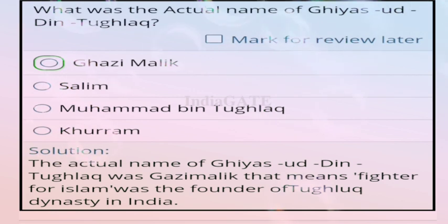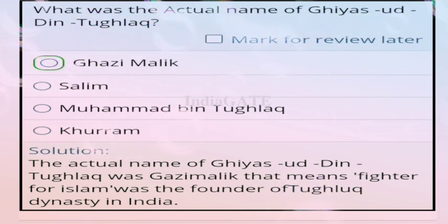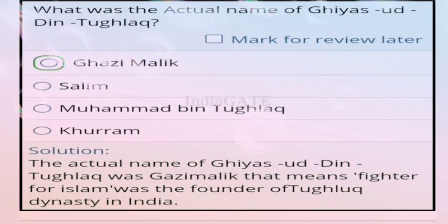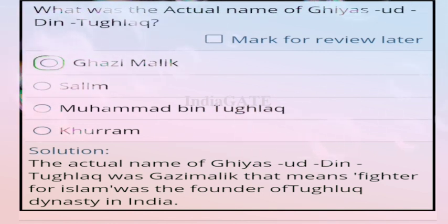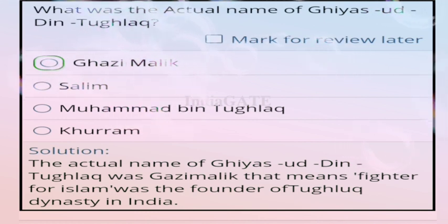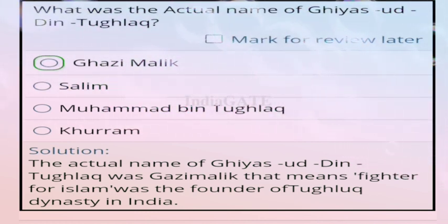Question 89: what was the actual name of Ghiyasuddin Tughlaq? Correct answer is Ghazi Malik. Ghazi Malik, meaning 'the fighter for Islam,' was the founder of the Tughlaq dynasty in India.